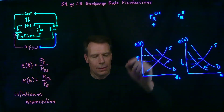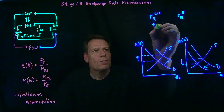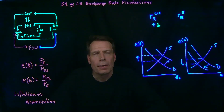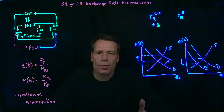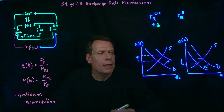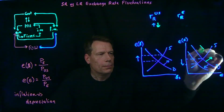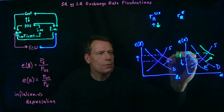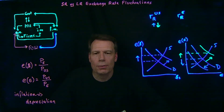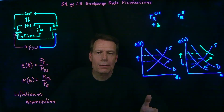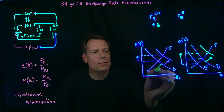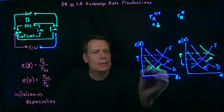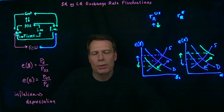If the real interest rate in the US fell instead, we would see the opposite. People in the US would want to buy bonds in Europe where the rate of return is higher. To buy those bonds, they would have to buy euros, and that would increase the demand for euros, increasing the exchange rate for euros and causing an appreciation of the euro. And as these people sell their bonds and buy euros to purchase European bonds, they are also selling dollars, which leads to a decrease in demand for dollars and a decrease in the exchange rate for the dollar — the dollar is depreciating.